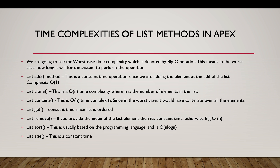Now let's discuss list methods and their time complexities. You need a basic understanding of Big O notation — Big O denotes the worst-case time complexity of an operation. There are two types of complexity: time complexity and space complexity.